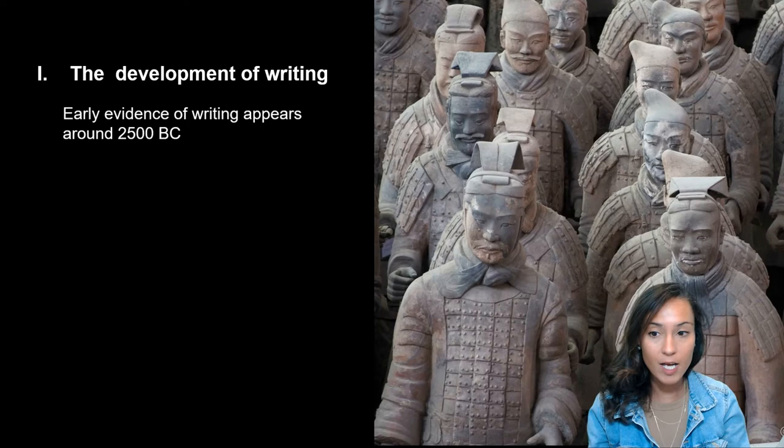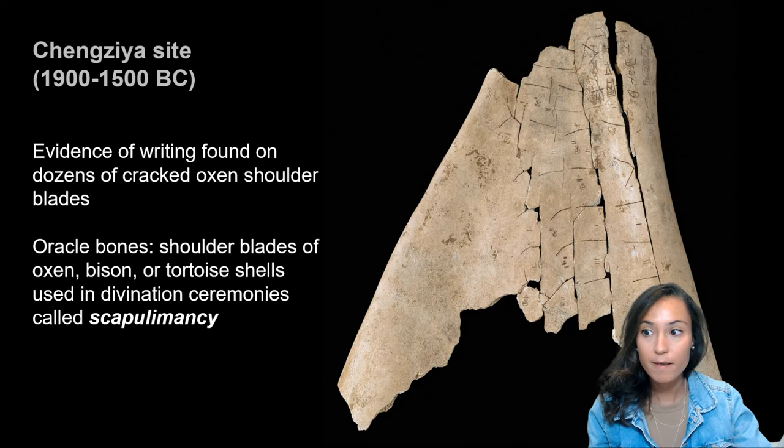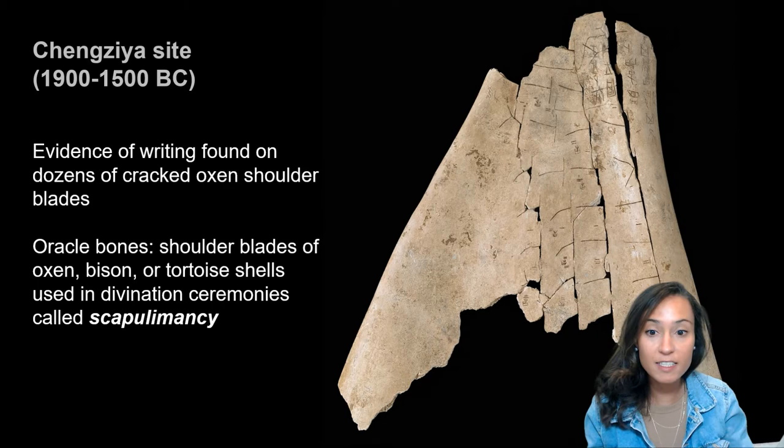This evidence is associated with divination rituals and comes from the site of Shang Ziya. At Shang Ziya, we have evidence found of writing in dozens of cracked oxen shoulder blades. These bones are identified as oracle bones and were used in divination ceremonies.